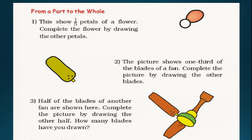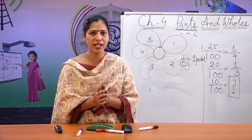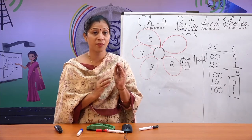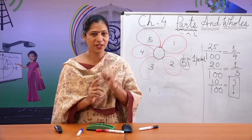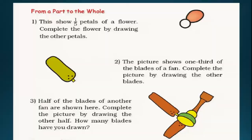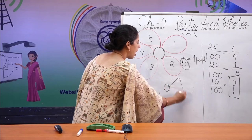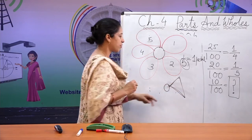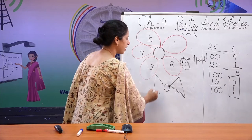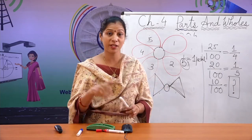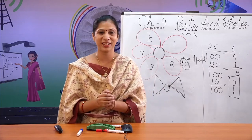If 1 third is 1 blade, the whole will be 3 blades total — do it on your own. Also, half of the blades of another fan is shown. If I draw half a picture, can you draw the other half? For example, if I show you half of a picture like this, the other half would mirror it. So now can you draw the other half of the fan? Yes, you can — it is very easy.